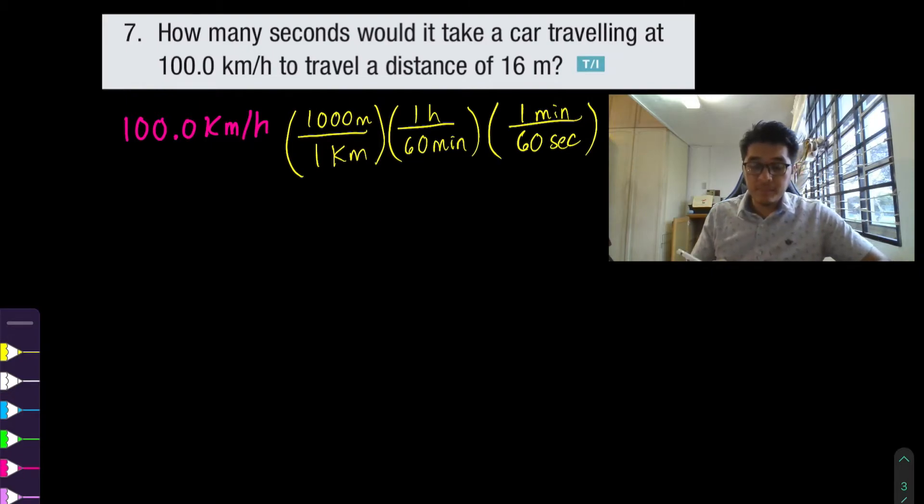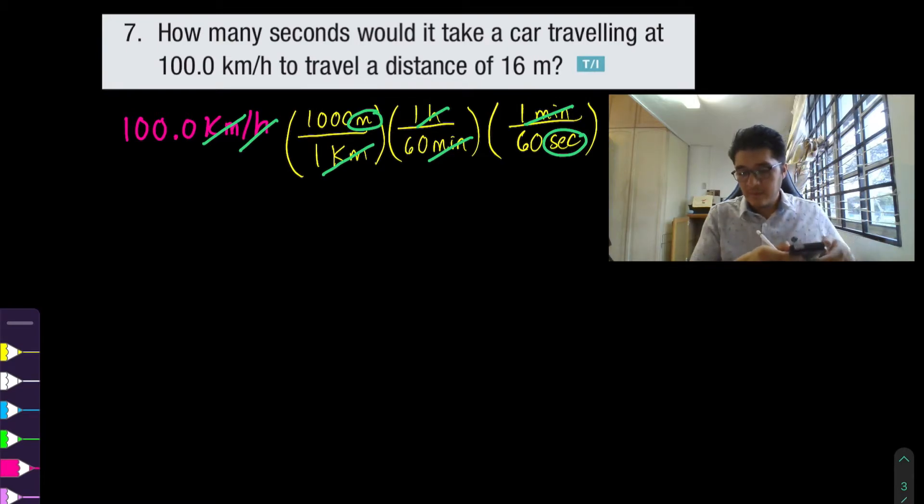So what do I mean by canceling out? Look at the units here so kilometers on top cancel out with kilometers on the bottom, hour at the bottom cancel out with the hour from the top, minute at the bottom cancel out with the minute on the top so the two units you're left with are meters per second. So a hundred times a thousand divided by 60 divided by 60 you get 27.8 meters per second.